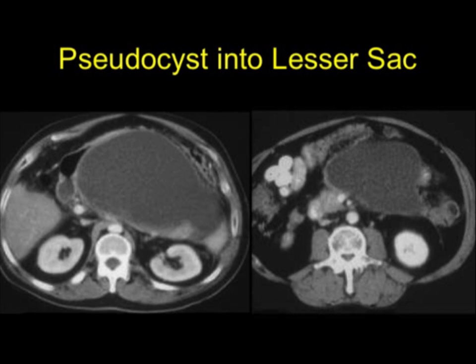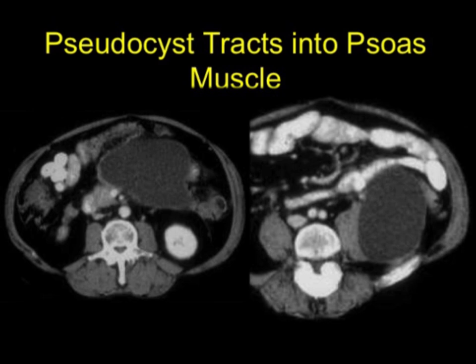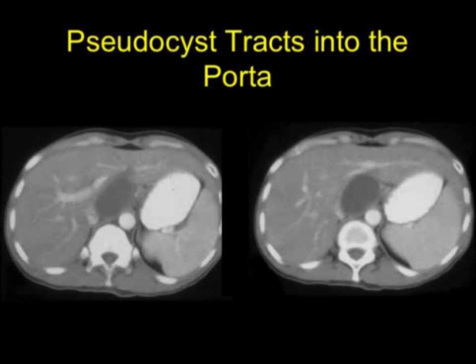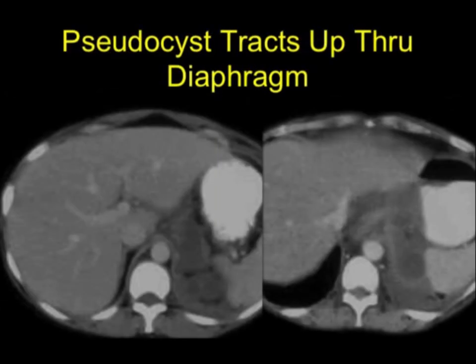Sometimes pseudocysts are lobulated or multiple. Pseudocysts can track up into the posterior mediastinum or downward — in this case you can see tracking to the left psoas muscle. They can track into the porta hepatis and at times obstruct, though rarely, the common duct. They can also go upward posteriorly near the spleen, near the GE junction, and can present on chest X-rays as a mediastinal mass.